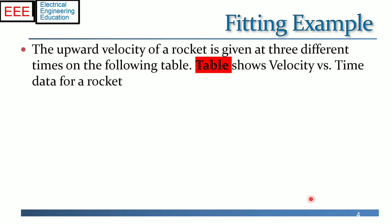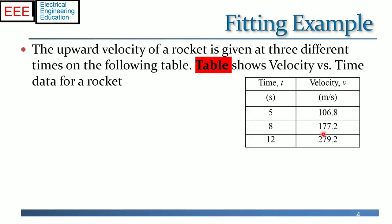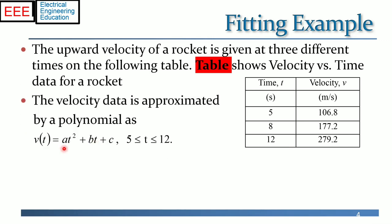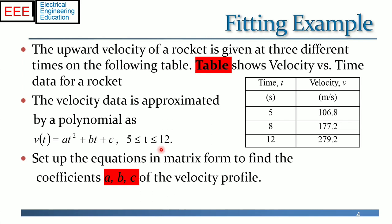Here we present an example of practical importance. The upward velocity of a rocket is given at three different times on the following table which shows the velocity versus time data for the rocket. The velocity data is approximated by a polynomial as v of t equals A t square plus B t plus c for a time period of 7 seconds between 5 and 12 seconds. We have to set up the equations in matrix form to find the coefficients A, B, C of the velocity profile for data fitting.